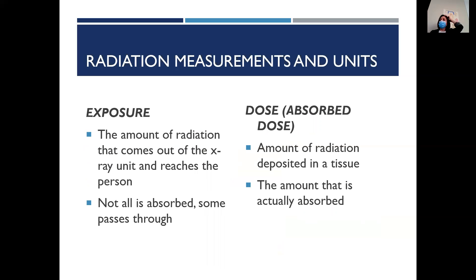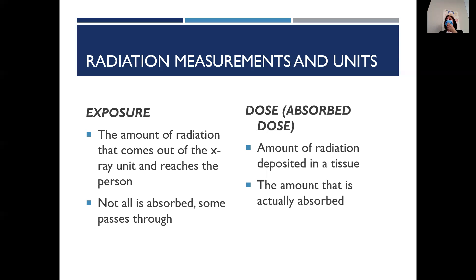Radiation measurements and units can get a little confusing as we talk about dosing. The exposure is the amount of radiation that comes out of the x-ray unit and reaches the person — not all of it gets absorbed. Some x-ray photons pass right through and don't actually absorb into the tissue at all, so it's not 100%. The dose is the amount of radiation deposited into the tissue — what is actually counted as absorbed. Then there is the amount actually absorbed into the dose.